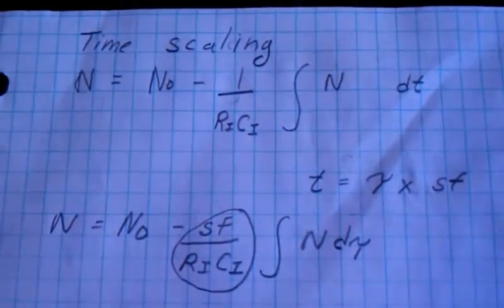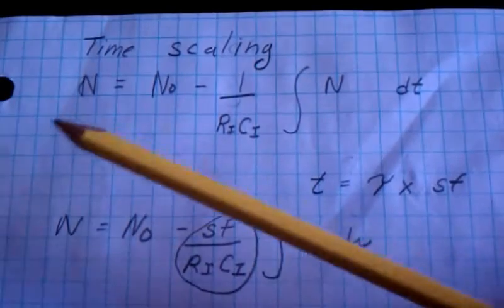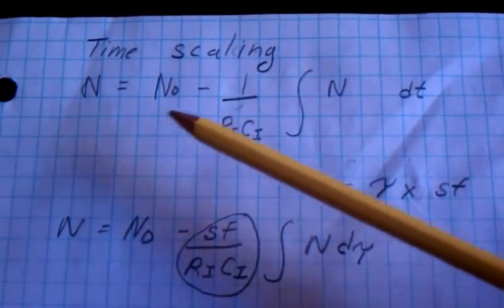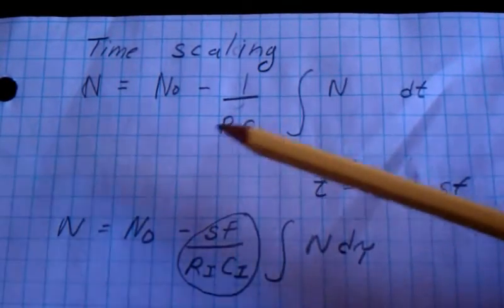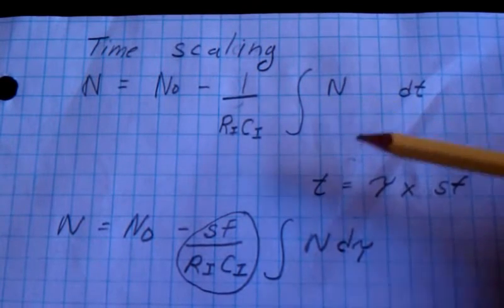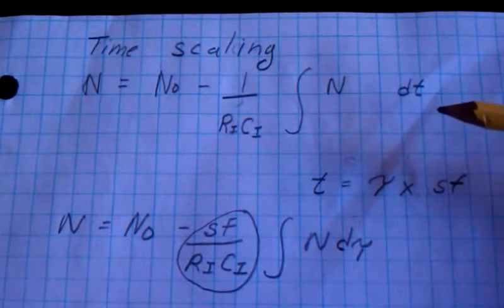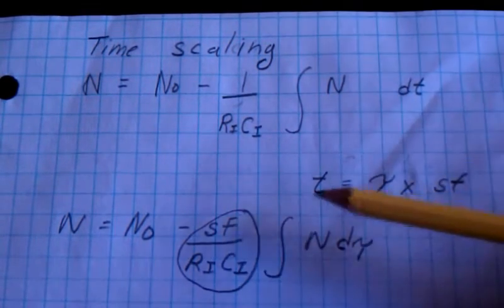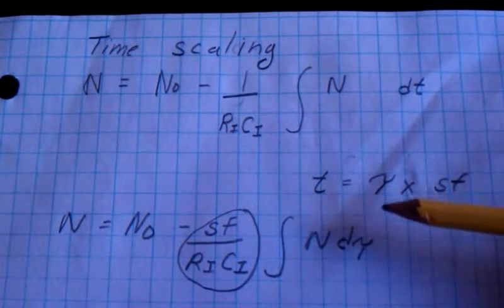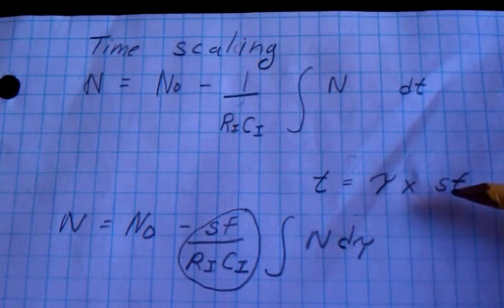Now we will introduce formal scaling terms. Here's the nuclear decay equation in integral form. If we want to make the simulation run faster or slower, we can substitute T for tau times some scaling factor.